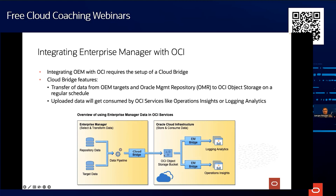We declare a bucket where Enterprise Manager regularly uploads data. You can use one bucket or multiple buckets for different services — for example, one for logging analytics, one for operations insights, one for the warehouse. You can create multiple buckets and multiple bridges. The different services pick up the data from object storage, so that's how data continuously flows into the services.